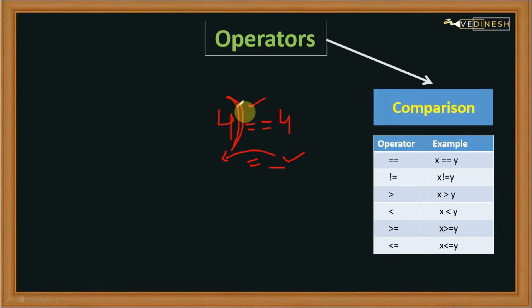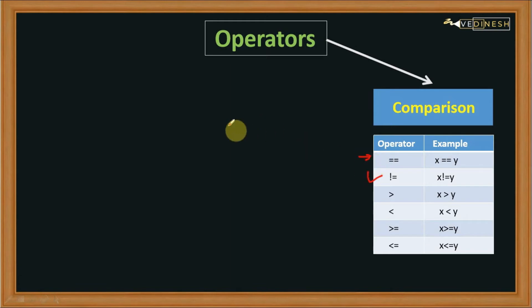The double equals to operator compares the value on the left hand side with the value on the right hand side. Next is not equals to — it is the reverse. We check if LHS is not equals to RHS, so if they are not equal then it returns true, otherwise it returns false.